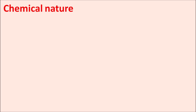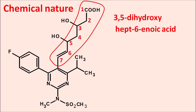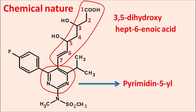Let us look at the chemical nature of this drug. The structure of rosuvastatin contains a long chain with a carboxylic acid group. Numbering the carbons 1 through 7, we find 3,5-dihydroxy groups and a double bond at the 6th position, giving the chain the name Hept-6-enoic acid. So 3,5-dihydroxy-Hept-6-enoic acid is present in rosuvastatin and is mainly responsible for inhibition of HMG-CoA reductase activity. This chain is attached to a heterocyclic ring system — pyrimidin-5-yl. Rosuvastatin is a free acid, meaning it is an active drug that does not require any metabolism for activation and can directly inhibit the HMG-CoA reductase enzyme, thereby inhibiting cholesterol synthesis within the liver.